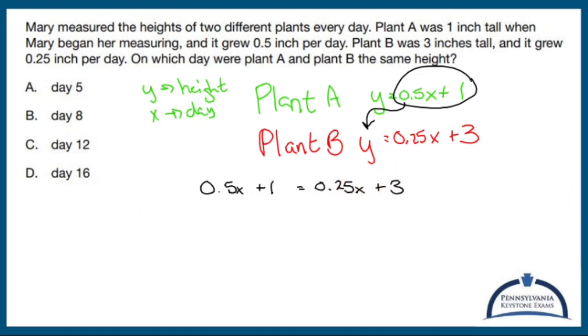I have a variable on both sides, so I'm going to subtract 0.25x from both sides. So 0.5 or 0.50 minus 0.25 is going to end up being 0.25.